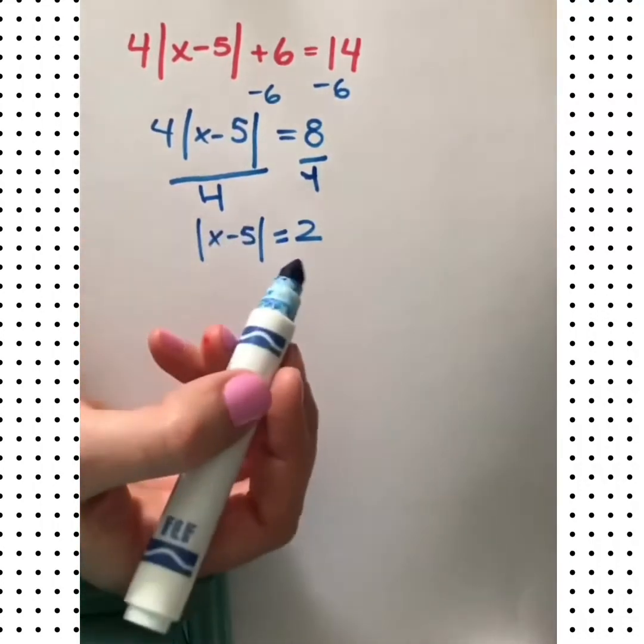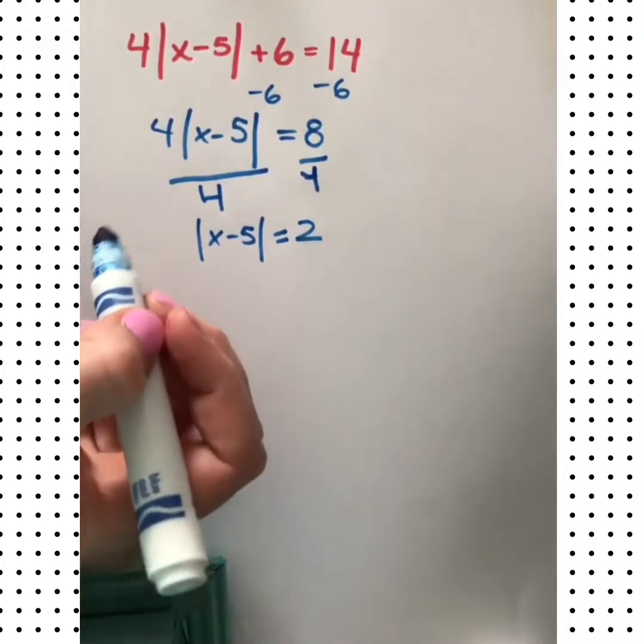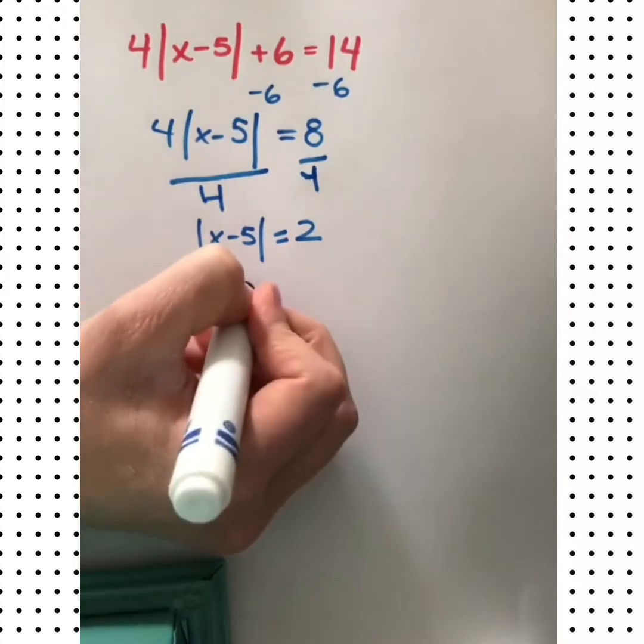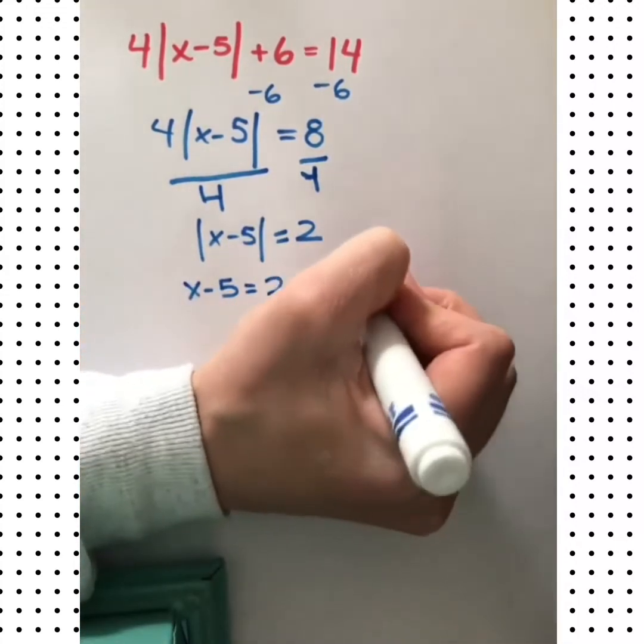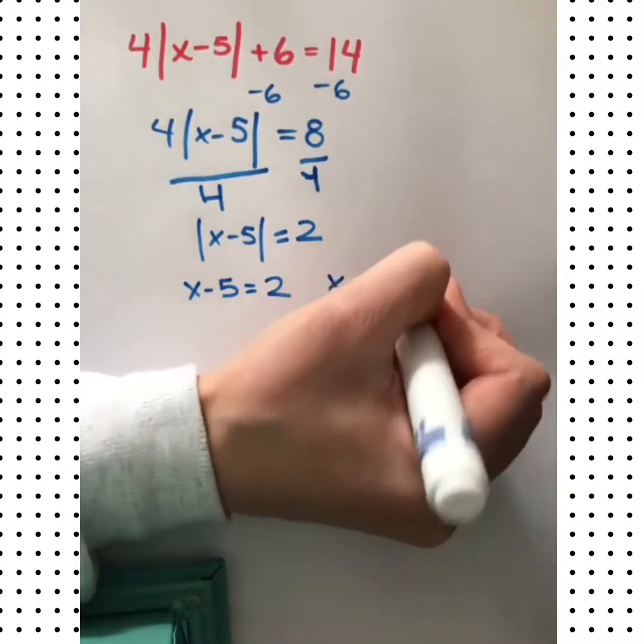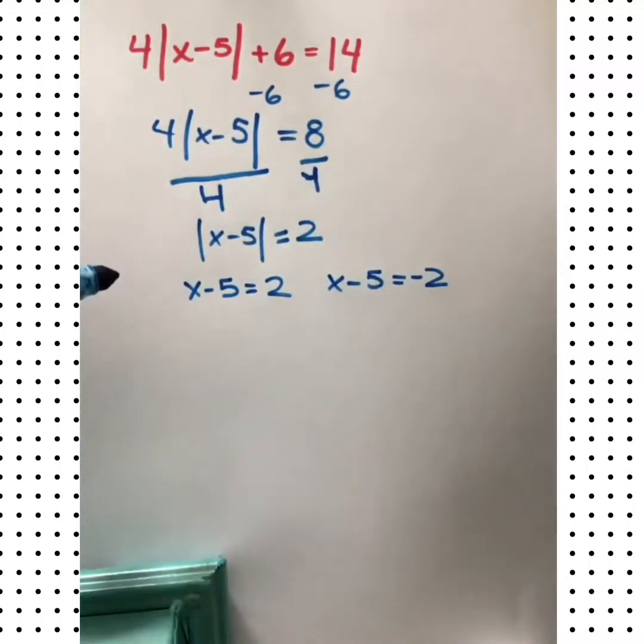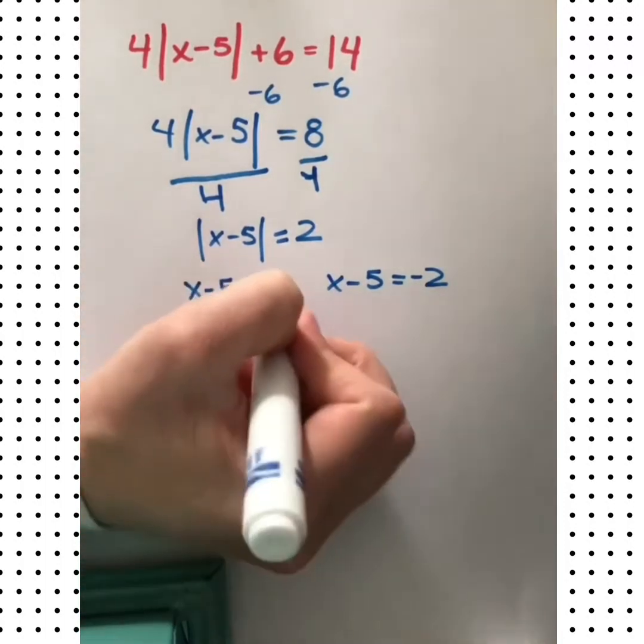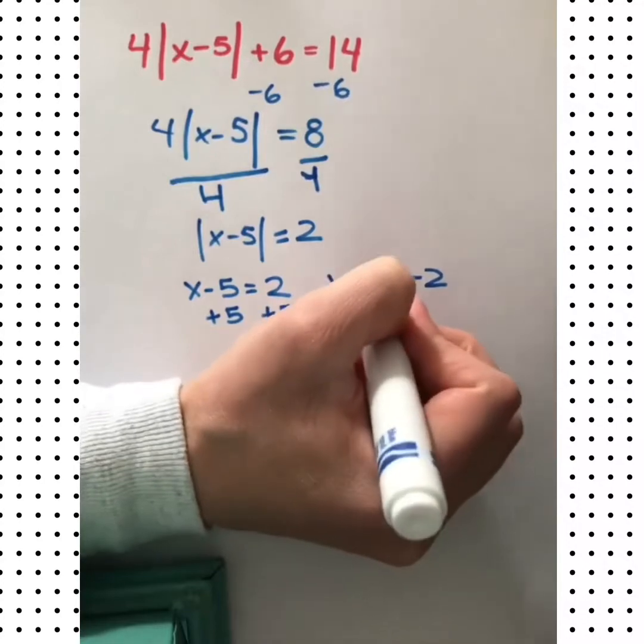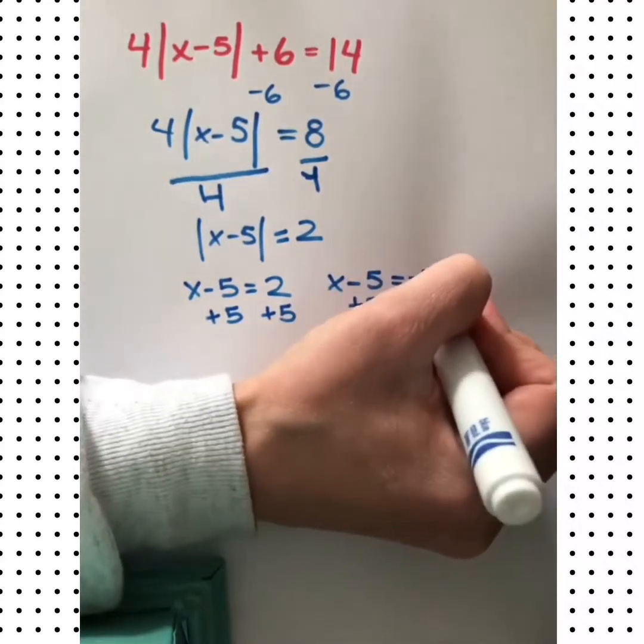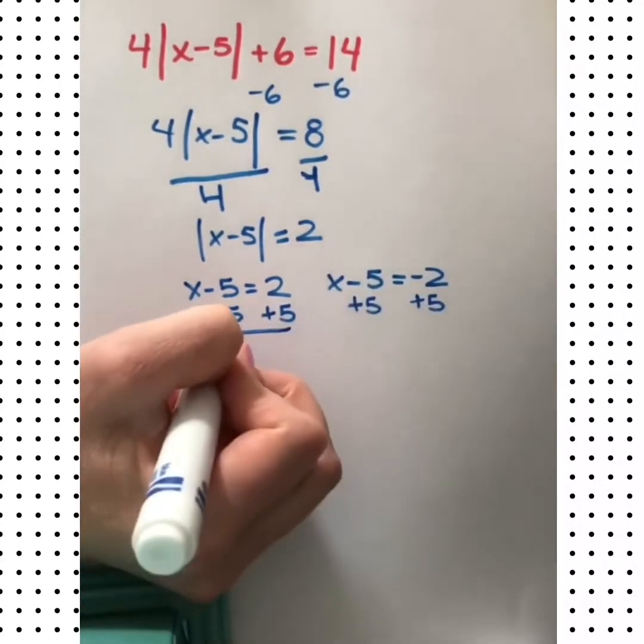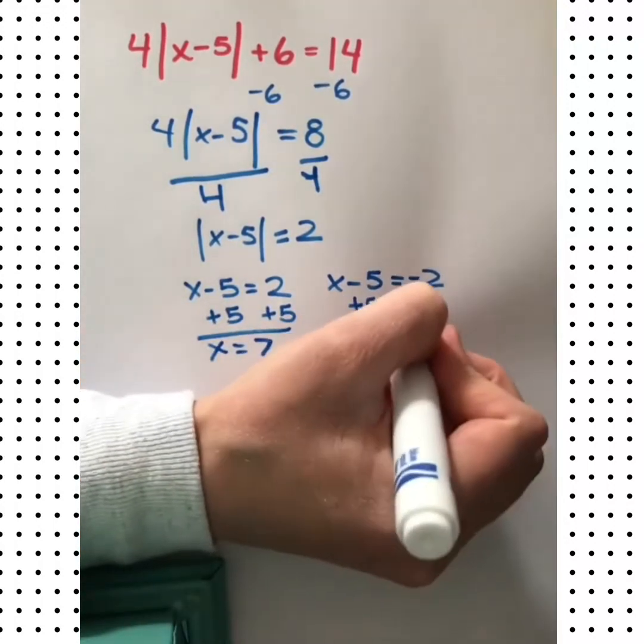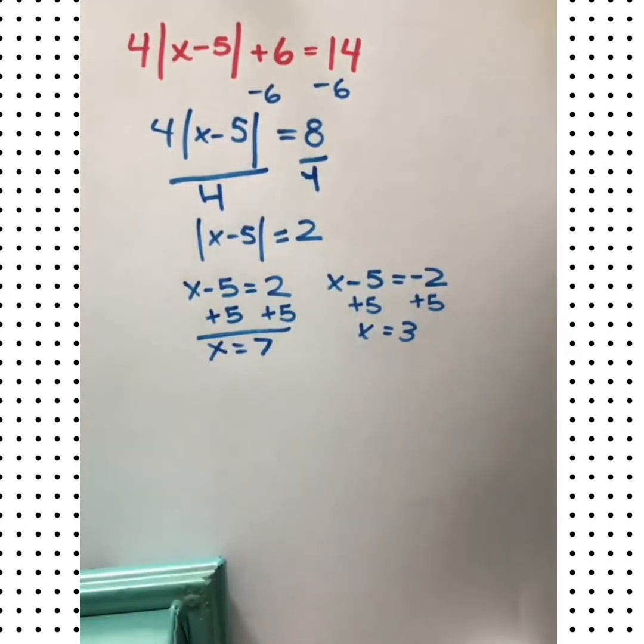What value would give us an absolute value of 2? Well, 2 and negative 2. There we have our two separate cases and then we solve each one. 7 and 3, those are our two solutions.